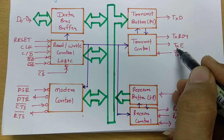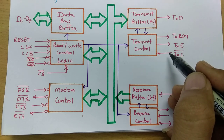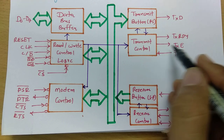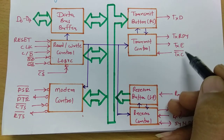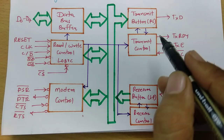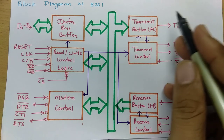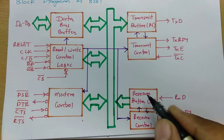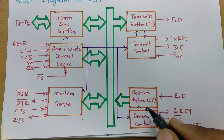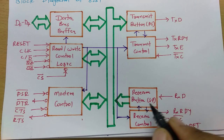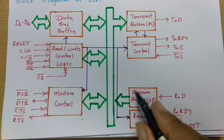TXE stands for Transmitter Empty, indicating the output register is empty when active high. The transmitter clock ensures proper synchronization. In the receiver section, serial data that is received gets translated into parallel data — the receiver buffer is a serial-to-parallel converter.